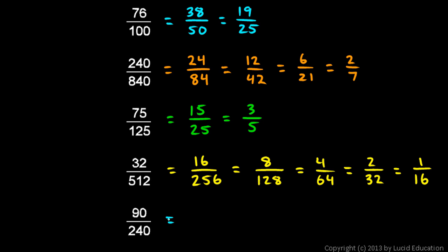90 over 240. Again, they both end in 0 so they're both divisible by 10: 90 divided by 10 is 9, and 240 divided by 10 is 24. Now they're not both even, so we can't divide by 2, but they are both divisible by 3: 9 divided by 3 is 3, and 24 divided by 3 is 8. So 3/8 is the answer.